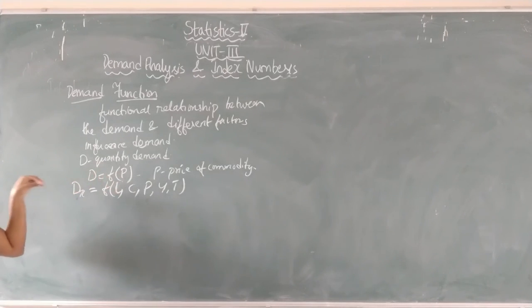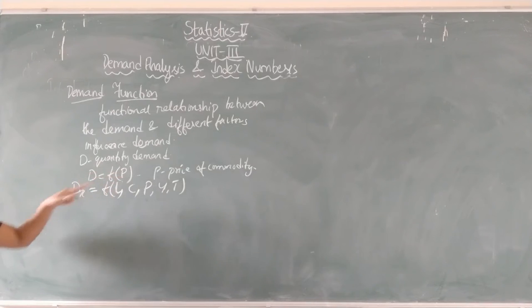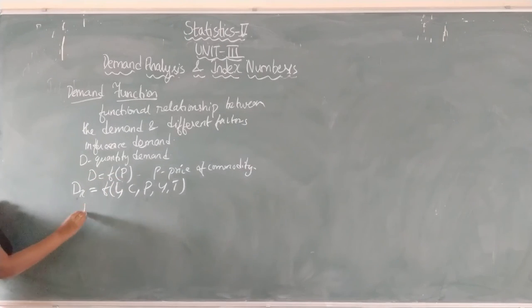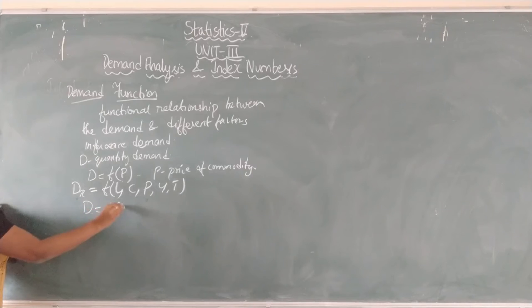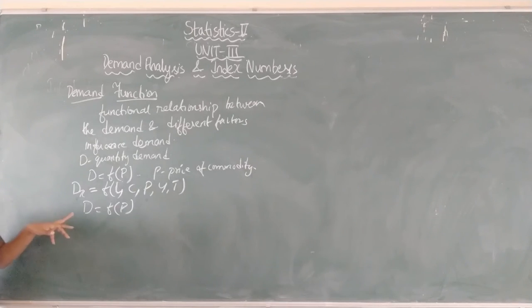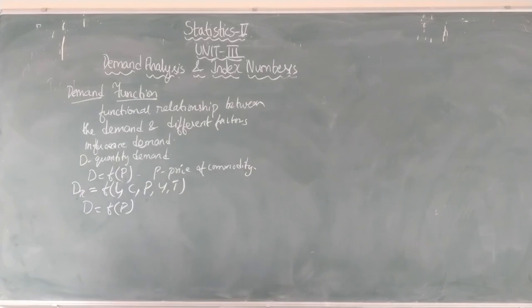Generally we will be finding the functional relationship in terms of price only, because the major effect will be from price. So generally we write D equals F of P as the demand function.